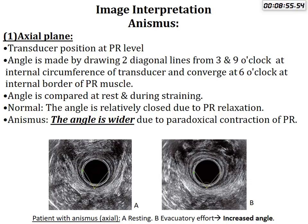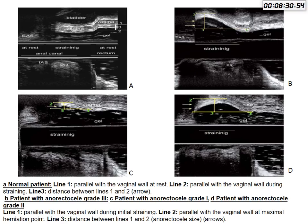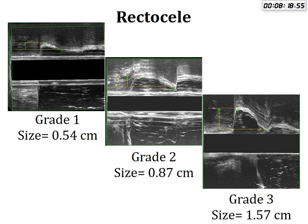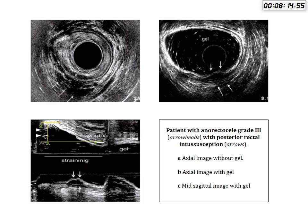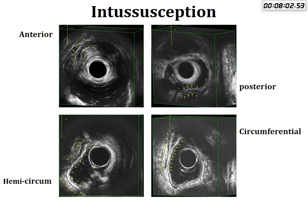This shows the puborectalis during rest — we measure from the internal border of the probe to the midline posterior. If the angle becomes wider during straining instead of relaxing, the puborectalis contracts — this is anismus. This is an anterior outpouching in the 3D ultrasound — this is a rectocele, shown in grades one, two, and three. During examination, if more than two walls are detected — wall one and wall two — this is intussusception, shown anteriorly, posteriorly, laterally, and circumferentially.